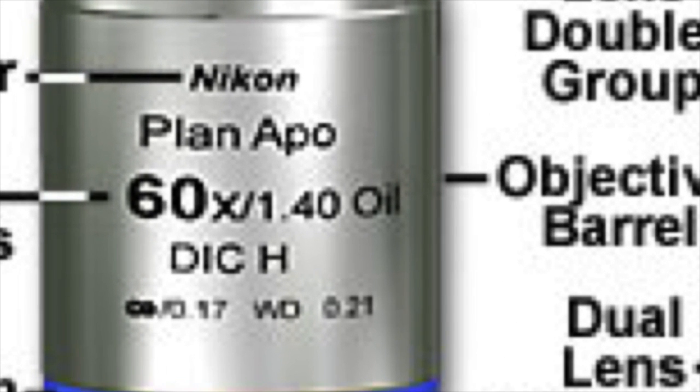You also see the word 'oil' printed on the barrel. Some objectives use immersion oil, requiring you to put a drop of oil between the front lens of the objective and the cover slip on the slide. Some objectives use glycerin, and others are water immersion objectives. On the Leica confocal microscope, we have objectives that use all three of those, and we'll discuss them as we go along.